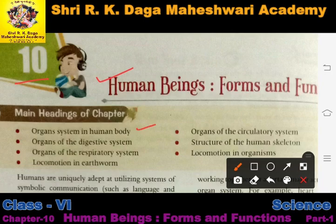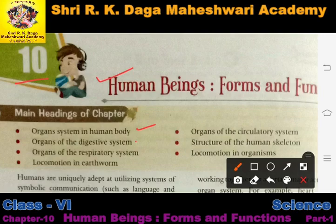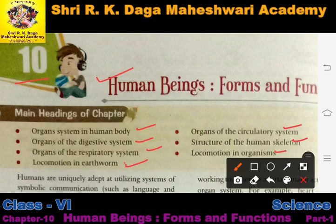First of all, let us see the main headings of the chapter. The human body has different organ systems. Our body performs many processes - for example digestion, respiration, circulation, excretion - and to perform all these processes, our body has specific organs. These organs come together to form a system. In this chapter we will study all these systems: digestive system, respiratory system, circulatory system, human skeleton, locomotion in earthworm, and locomotion in organisms.